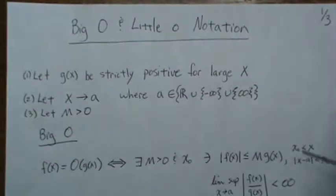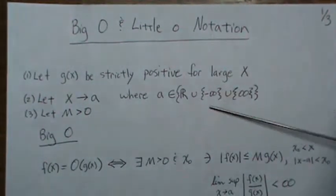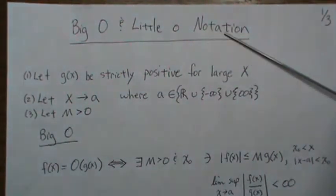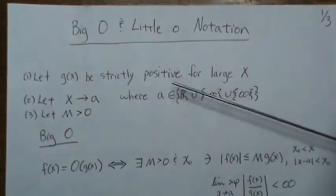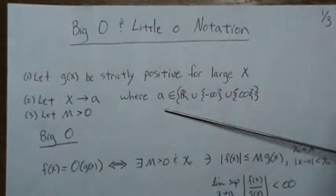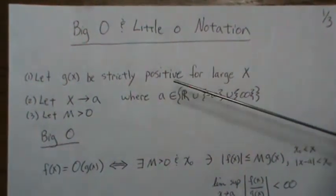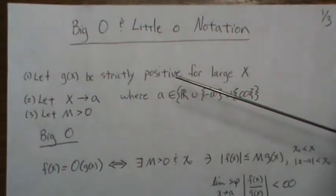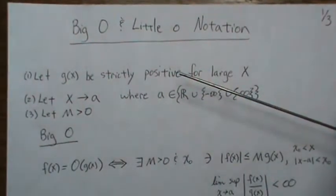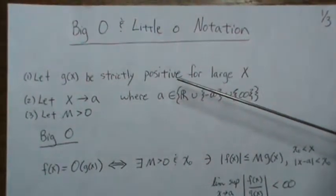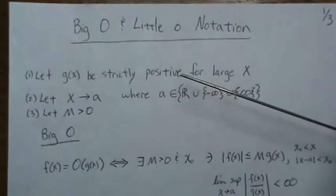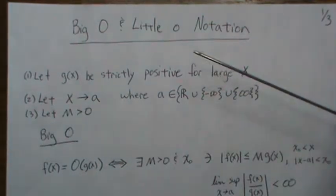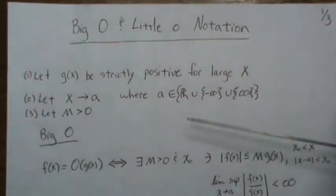In this video, we're going to look at the big O and little o notation. We're going to look at its definition, go through some simple examples, and then we're going to go through a couple examples with the moment-generating function and then cumulants, which is the log of the moment-generating function.